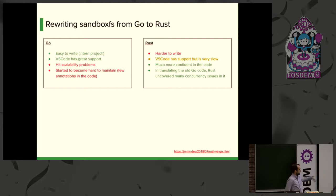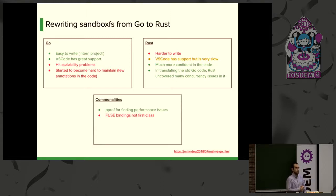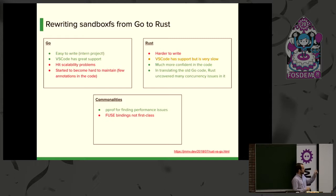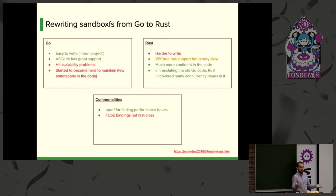I wrote down my experiences with the rewrite in a blog post you can look at later. On tooling: PPROF, Google's profiling tool, integrates extremely well with Go and was very useful in finding performance issues. It also works for Rust binaries with some more effort. The main problem is that FUSE bindings for both Go and Rust are not first-class — FUSE is a C project and the bindings for other languages are kind of rewritten from scratch, not very actively maintained, and missing some features.